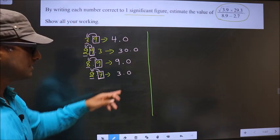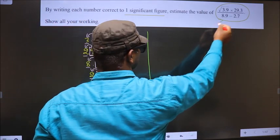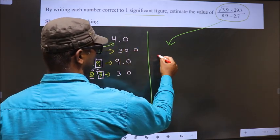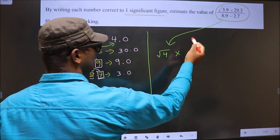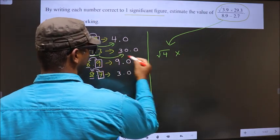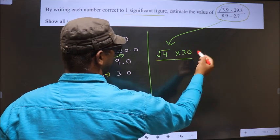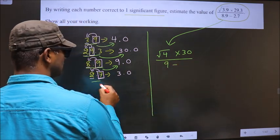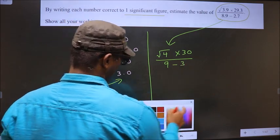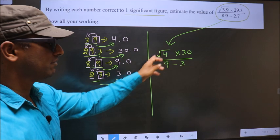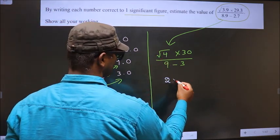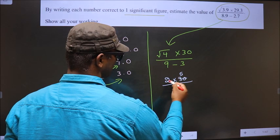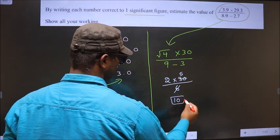Now we should replace these values over here. So, 3.9 should be replaced by 4. Square root of 4, into 29.3 should be replaced by 30, by 8.9 should be replaced by 9, minus 2.7 should be replaced by 3. Now we should simplify this. So, square root of 4 is 2, into 30, by 9 minus 3 is 6. Now 6 ones, 6 fives. 2 into 5 is 10. This is our answer.